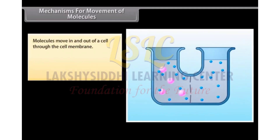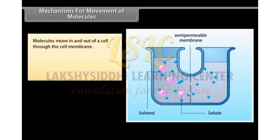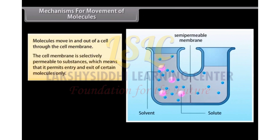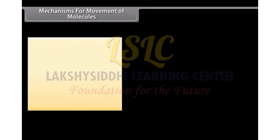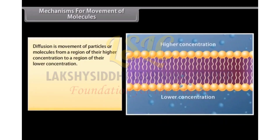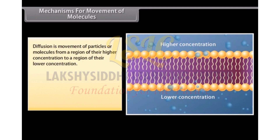Molecules move in and out of a cell through the cell membrane. The cell membrane is selectively permeable to substances, which means that it permits entry and exit of certain molecules only. The movement of molecules takes place by diffusion, osmosis and active transport. Diffusion is movement of particles or molecules from a region of their higher concentration to a region of their lower concentration.